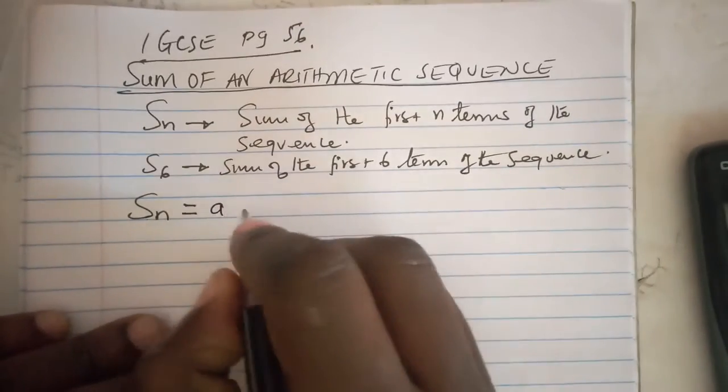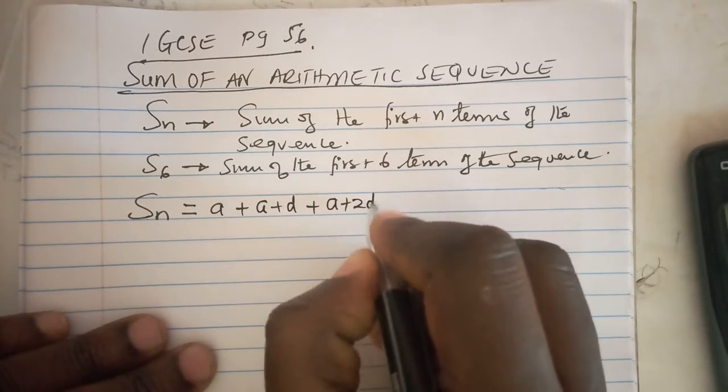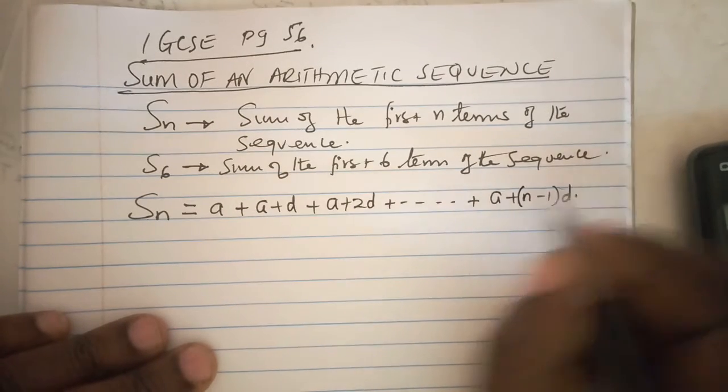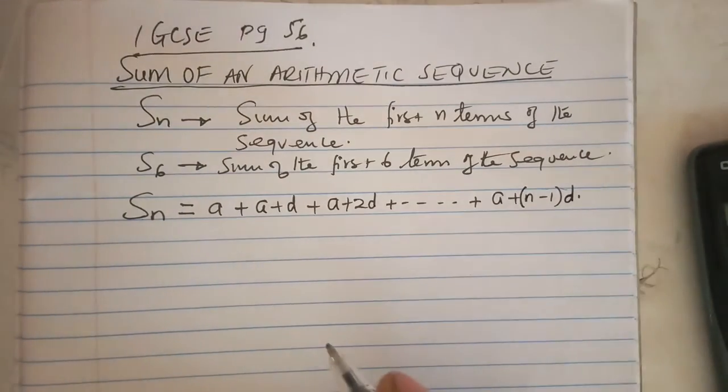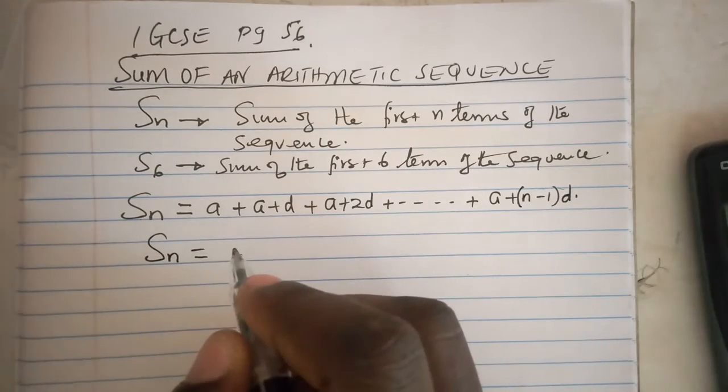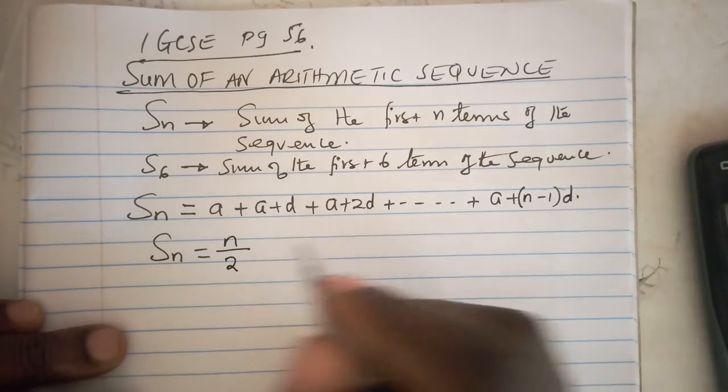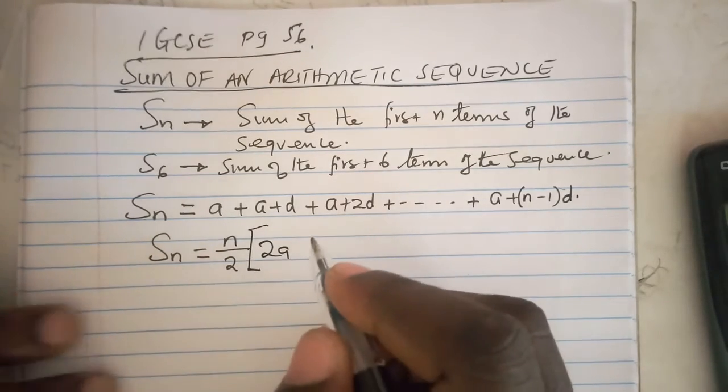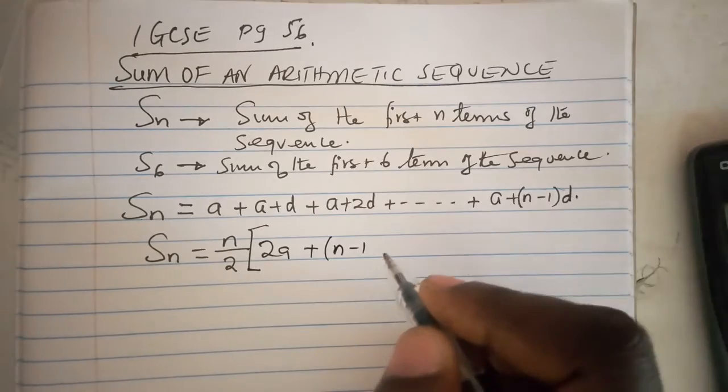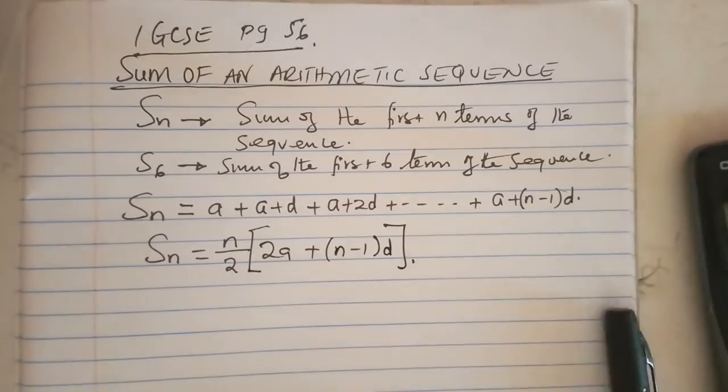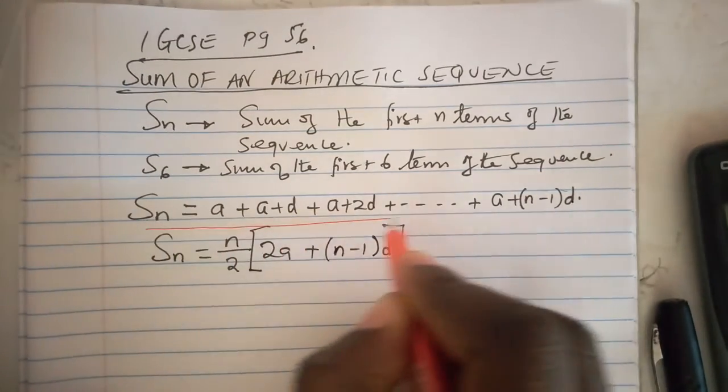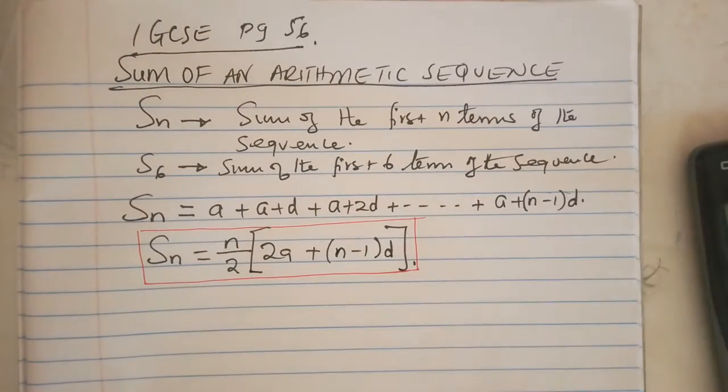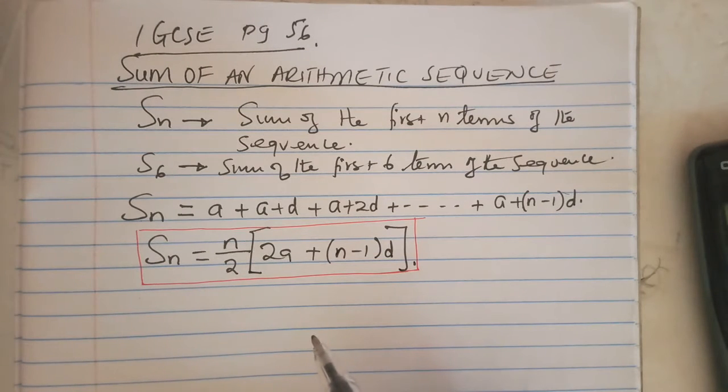The sum of the first n terms in an arithmetic sequence is given by n over 2 multiplied by bracket 2a plus n minus 1 close bracket times d. You should not fear this formula, it's just a very straightforward formula that is going to be explained right away. This formula is going to be explained in examples 12, 13, and even 14.